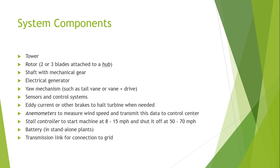Then there is the main shaft. It is a piece of metal or tube which constitutes the most important spinning parts, since it conveys the energy from the wind turbine blades to the other parts of the wind turbine.